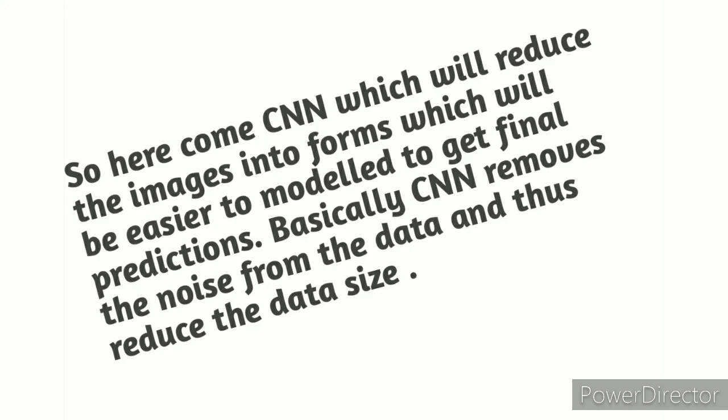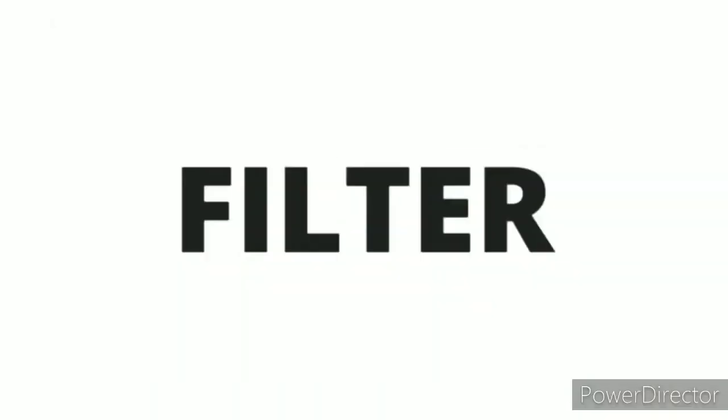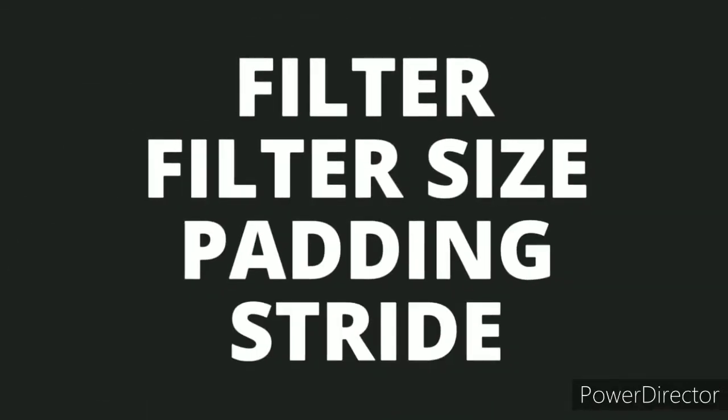Terminology in CNN. The important terms in CNN are: convolutional layer, pooling layer, and fully connected layer. In relation to the convolutional layer, there are more terms like filter, filter size, padding, and stride. We will talk about each now.